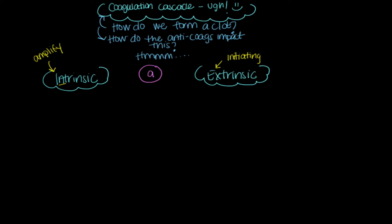The intrinsic pathway begins with factor 12, and factor 12 turns into factor 12a—A meaning the active form. Factor 12a changes factor 11 to 11a, then 11a changes factor 9 into factor 9a. Then 9a will change factor 10 into factor 10a. Factor 9a gets help from factor 8a, which came from factor 8, and together as a pair they help turn factor 10 to factor 10a.